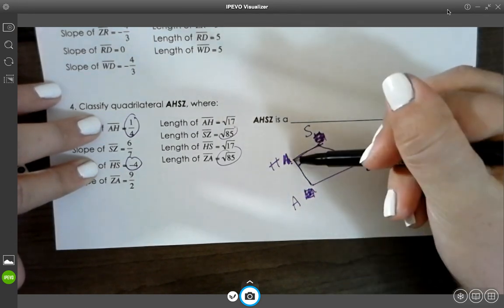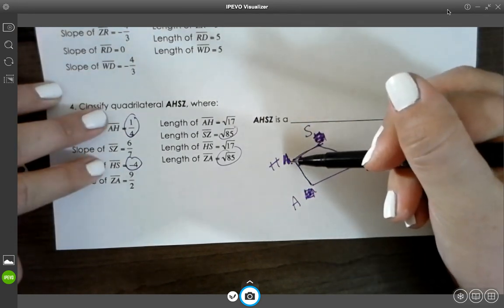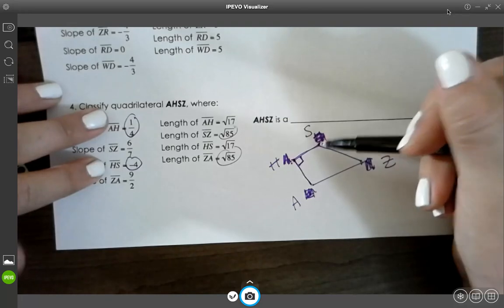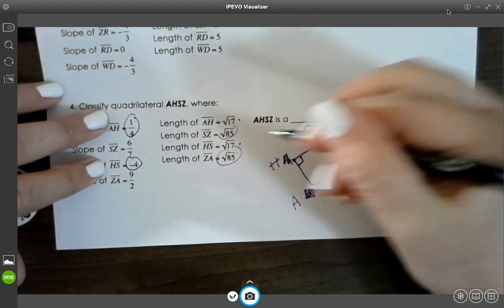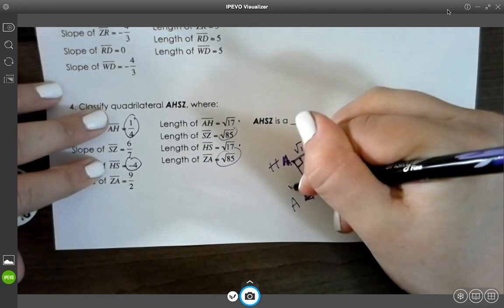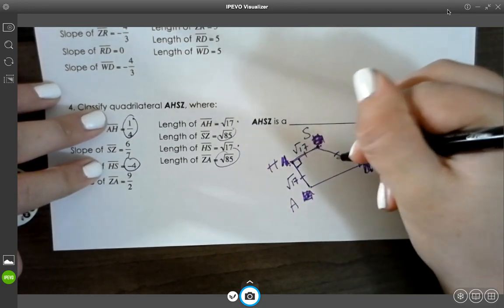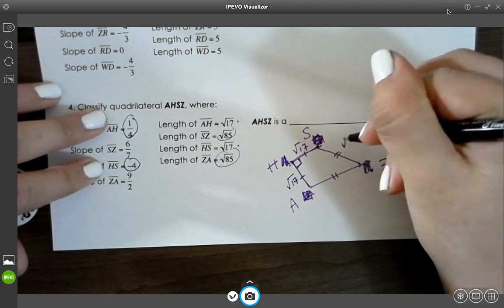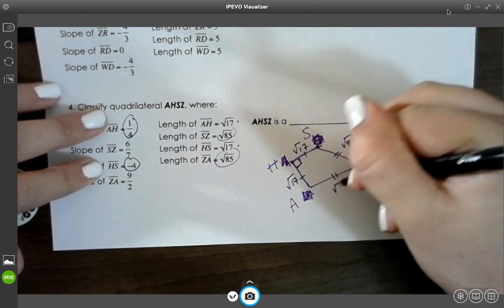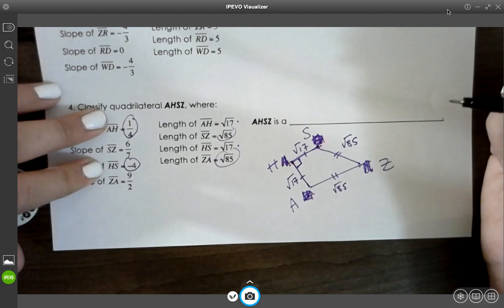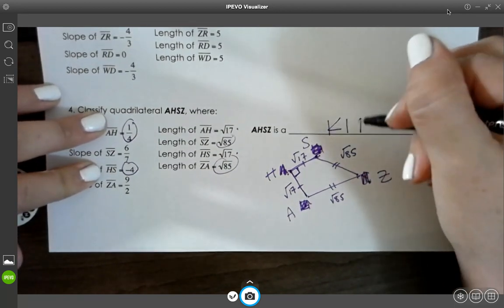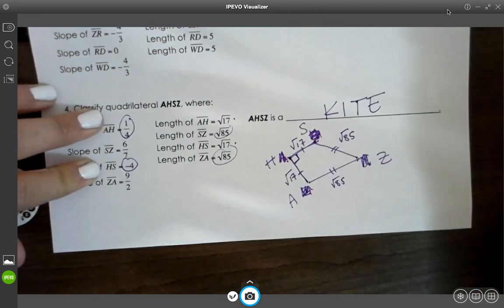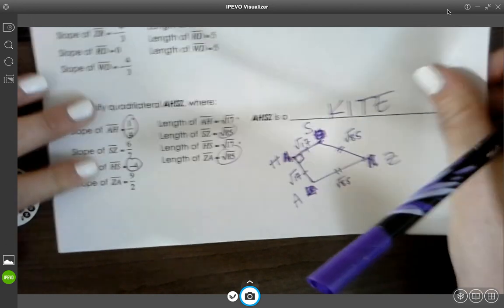So A, H, S is 1 over 4, and H, S is negative 4, so these ones also are square root of 17. So they're the same length, and these ones are the same length, square root of 85. So this would be a kite.